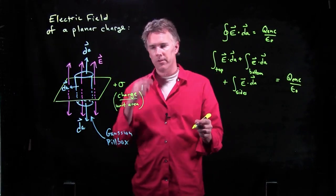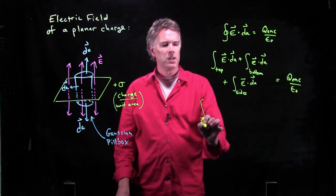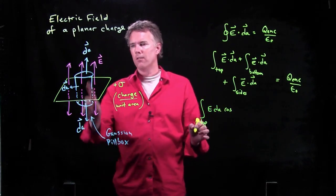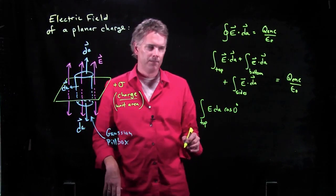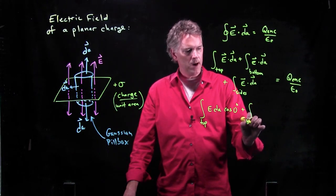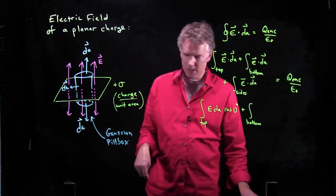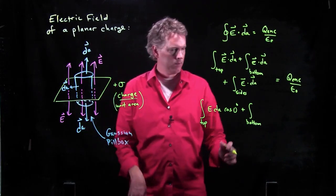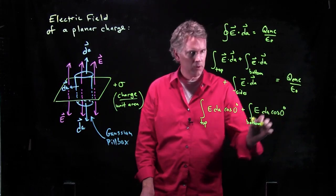What is the integral over the top? Well, the integral over the top becomes E times DA times cosine of zero degrees. They're in the exact same direction. What about on the bottom? Integral over the bottom. E is pointing down, right? This pink line. This is E. DA is also pointing down. And so we get E DA cosine of zero degrees again.